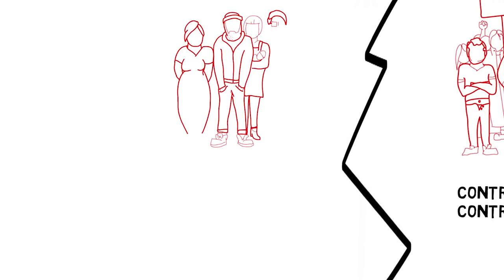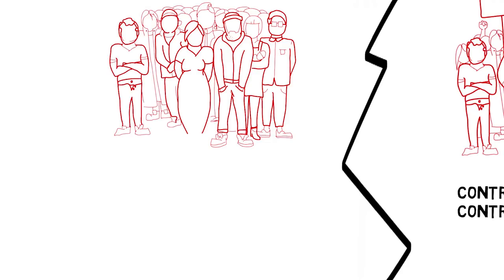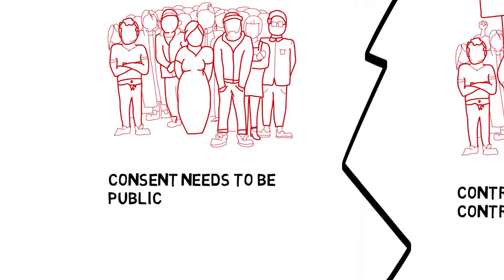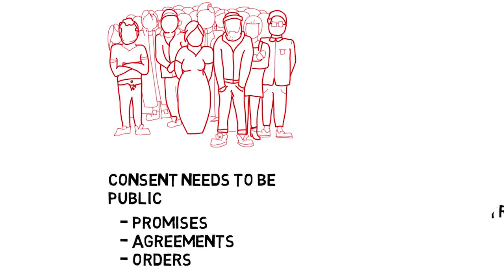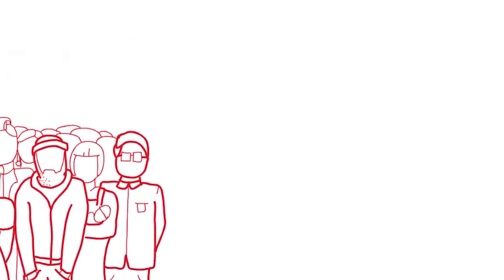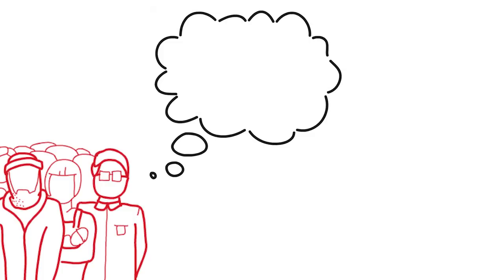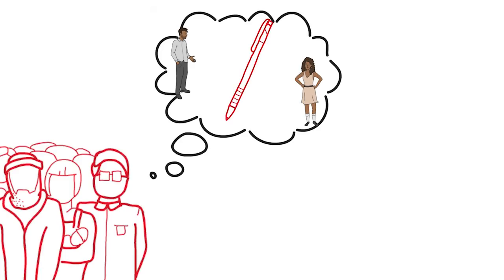But other people say that a mental decision is too private to count as consent. They say that consent needs to be public to transform our moral relationships with other people. They think that consent is a bit like promises, agreements, or orders. If someone only made a promise or agreement in their mind, then it would be too private to bind them. And if a sergeant only decides to give an order but doesn't communicate this order to the troops, then that isn't a proper order either. Fans of the behavioural view think the same is true of consent — it involves authorising another person's behaviour in a public way, and this requires behaviour indicating the authorisation.